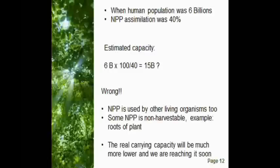It has been calculated that prior to human impact, NPP was about 150 million tons of organic matter per year. When the human population was 6 billion, through deforestation and other usage, humans had already appropriated about 40% of the terrestrial NPP. From that data, people might think the carrying capacity would be about 6 times 100 over 40, equal to 15 billion. However, this is not true because humans cannot use all NPP — it is also needed by other living organisms, and some NPP is not harvestable, such as plant roots. Therefore, the real carrying capacity of the human population would be much lower, and we are going to reach it soon.